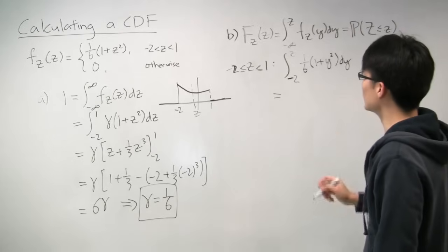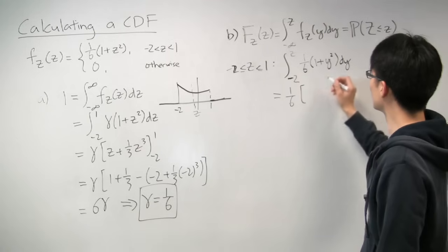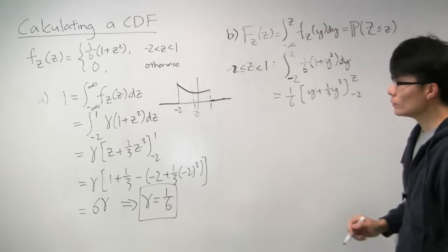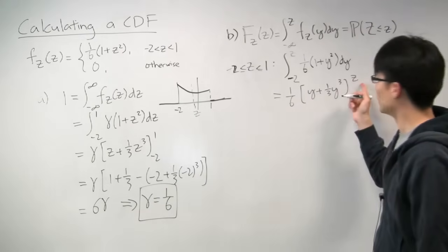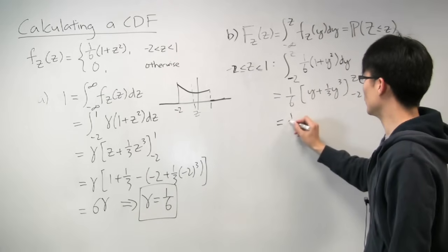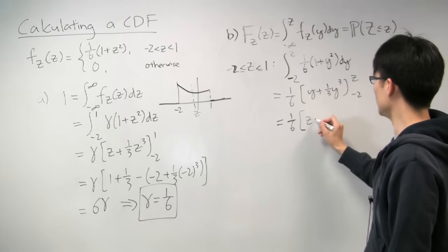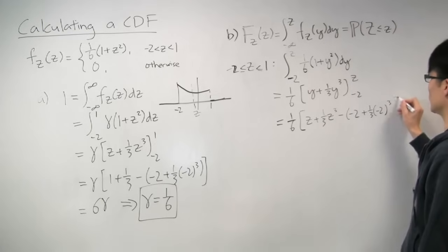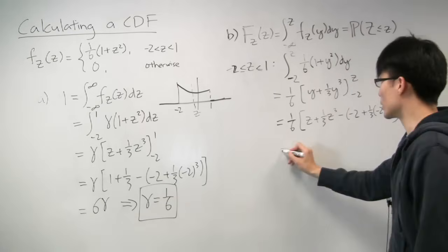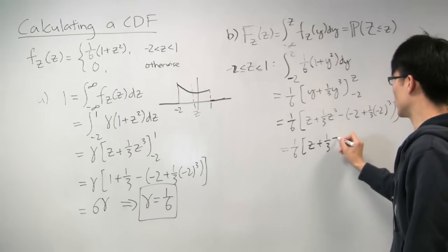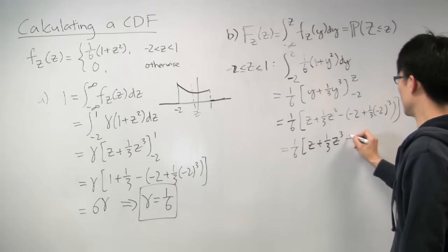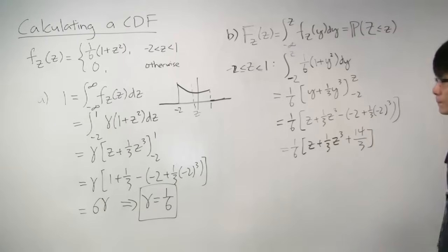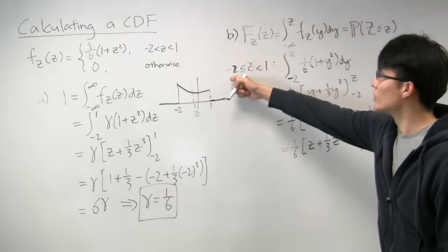And now it's just calculus again. And in fact, it's more or less the same integral. So what we get is y plus 1/3 y cubed from negative two to z. Notice the only thing that's different here is that we're integrating from negative two to z instead of negative two to one. And when we calculate this out, what we get is z plus 1/3 z cubed minus (minus 2 plus 1/3 minus 2 cubed). Which gives us 1/6 (z plus 1/3 z cubed plus 2 plus 8/3) gives us 14/3.